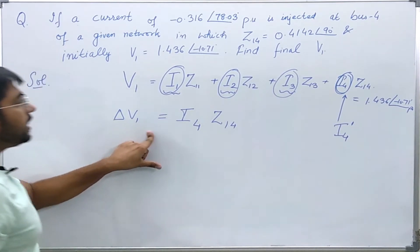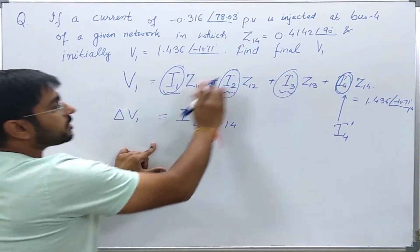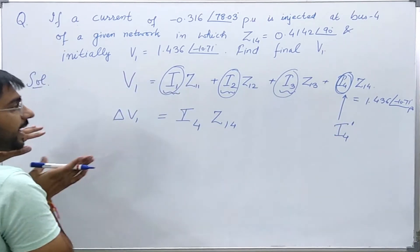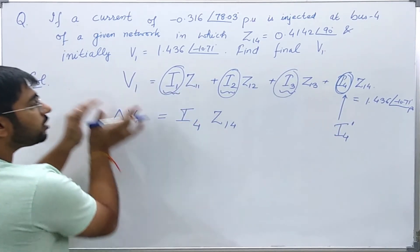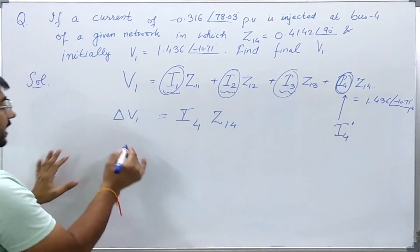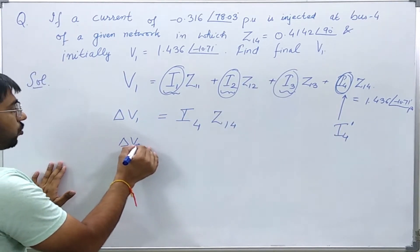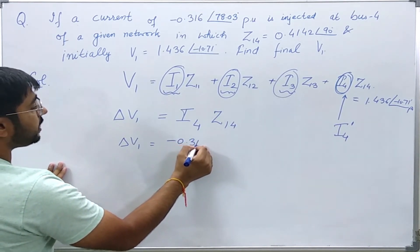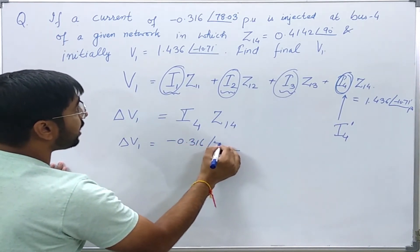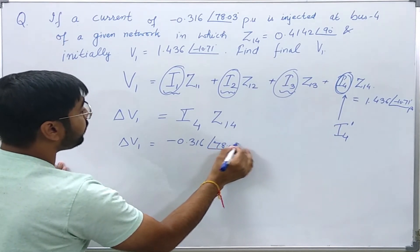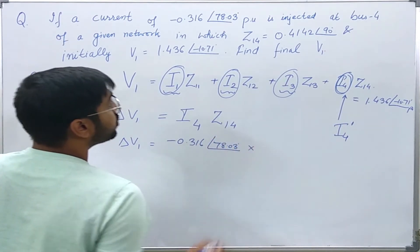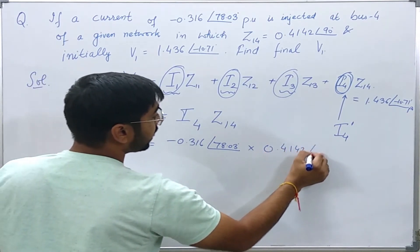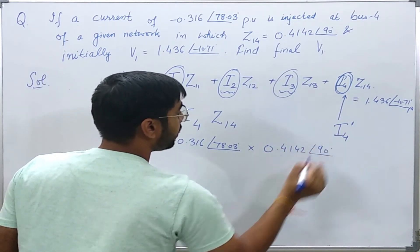So you see, if I deactivate these sources and just inject the given current source, then I will be able to find the change of voltage on bus 1 because of this current source. Delta V1 will come out to be minus 0.316 angle 78.03 degrees per unit into Z14, 0.4142 angle 90 degrees.